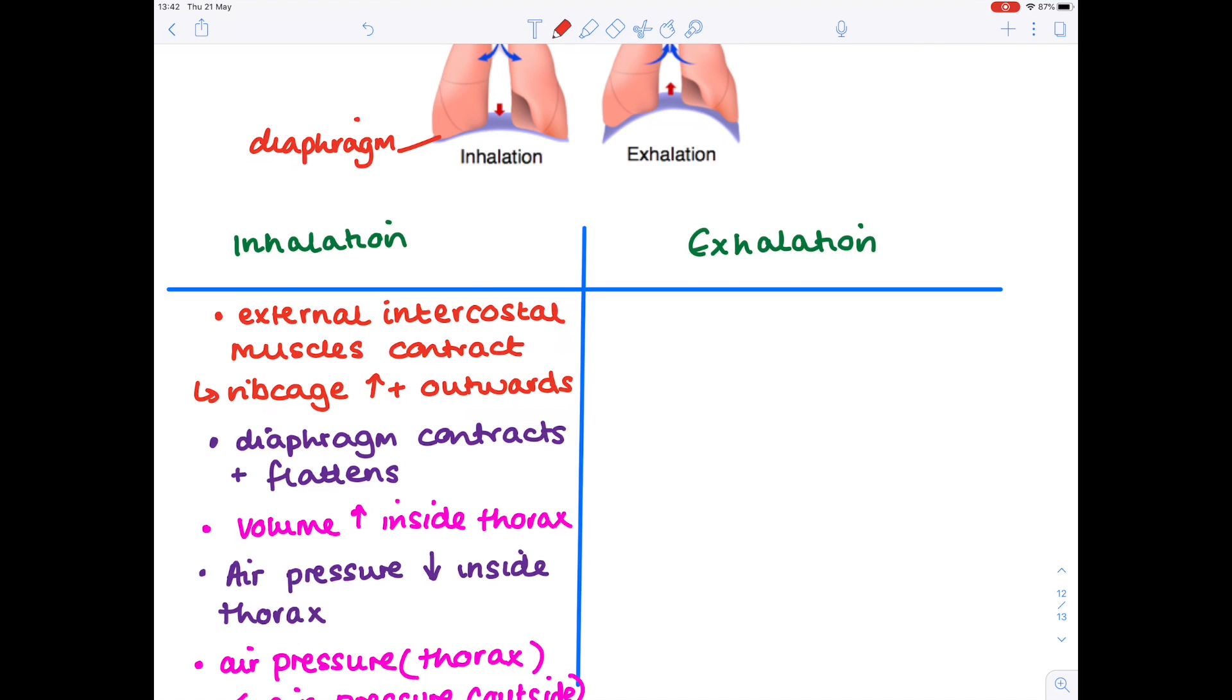Now with an exhalation, obviously, we're forcing air out of our lungs. And because antagonistic muscles are involved, we're going to notice that every single step is going to be the opposite to what we wrote for the inhalation. So just make sure you learn all the steps for the inhalation and then just reverse them for the exhalation. And that stops you learning things twice.